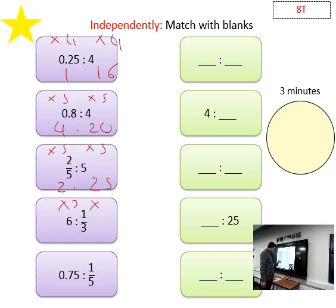Here we can multiply. So 0.75, let's try multiplying by 100. This is going to be 75. And here we've got one-fifth times 100, which equals 20.